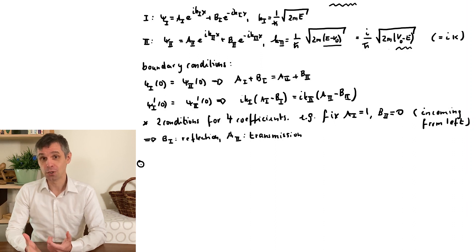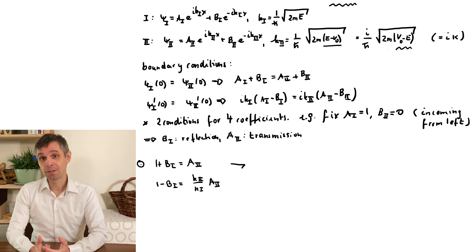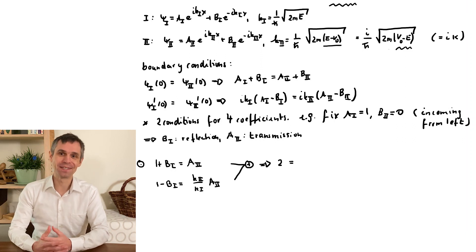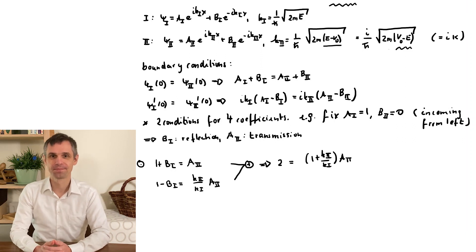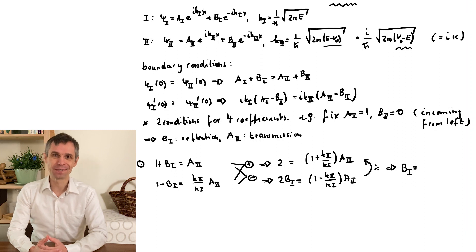First, we rewrite the conditions including our assumptions. Then, we form the sum and the difference of these expressions. Next, we divide the difference by the sum and this gives us the coefficient b1.